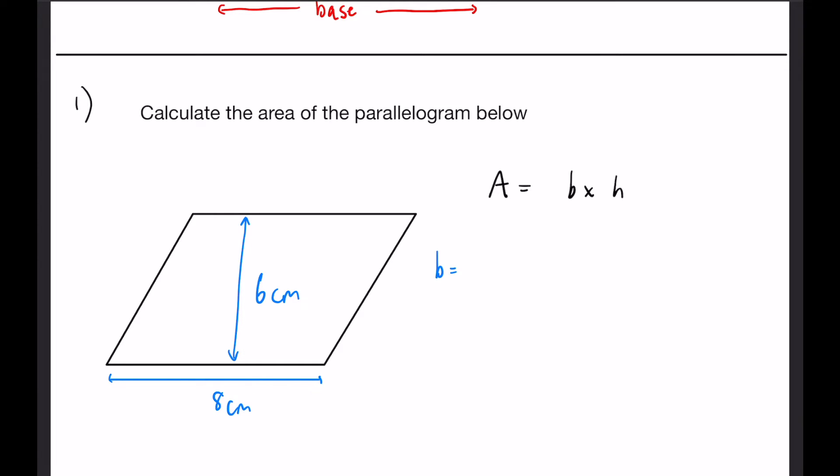We have our base equal to 8 and our height equal to 6 and again just to clarify sometimes they might throw in a little red herring and say that this is 7, you can ignore that one completely, we don't want to use the slanted height.